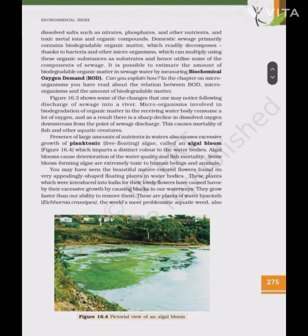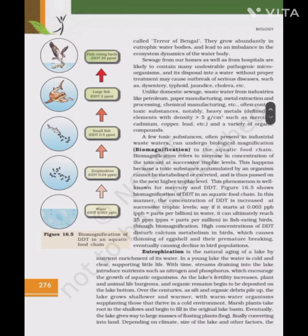Presence of large amounts of nutrients in water also causes excessive growth of planktonic, free-floating algae called an algal bloom, which imparts a distinct color to water bodies. Algal blooms cause deterioration of water quality and fish mortality. Some bloom-forming algae are extremely toxic to human beings and animals. Water hyacinth (Eichhornia crassipes), the world's most problematic aquatic weed — also known as the 'terror of Bengal' — grows abundantly in eutrophic water bodies and leads to an imbalance in the ecosystem dynamics of the water body.